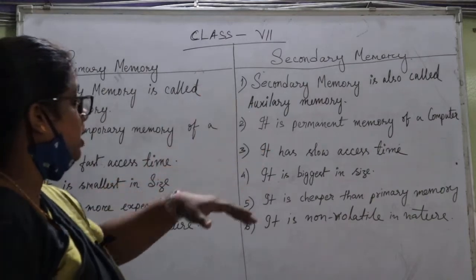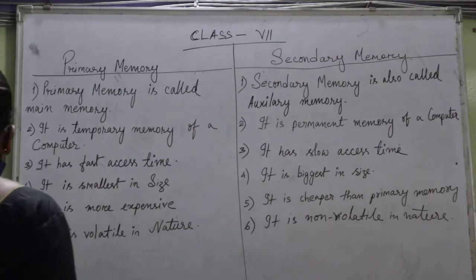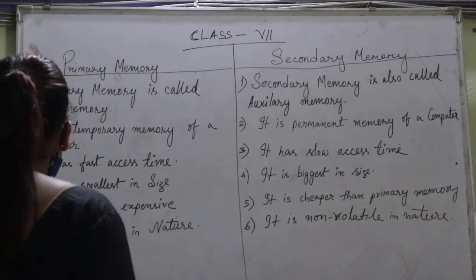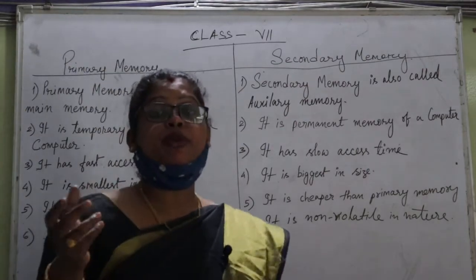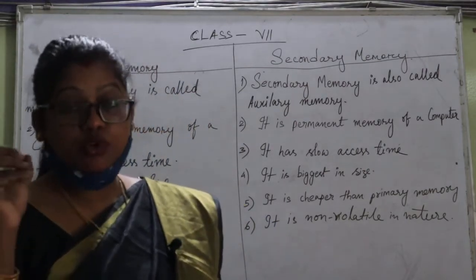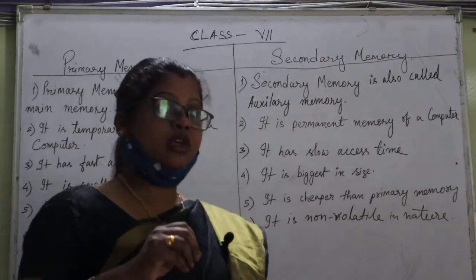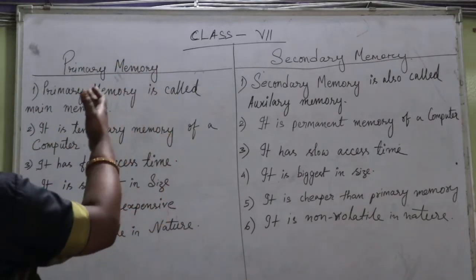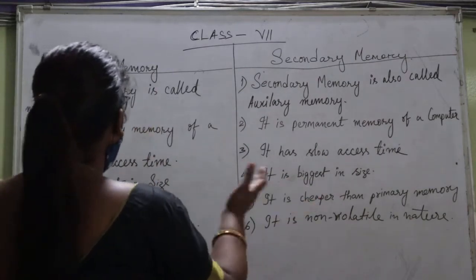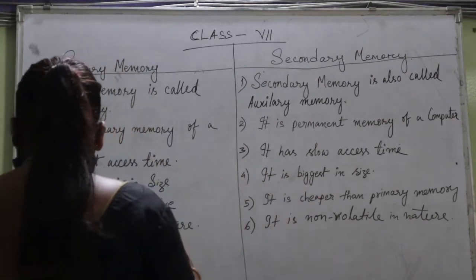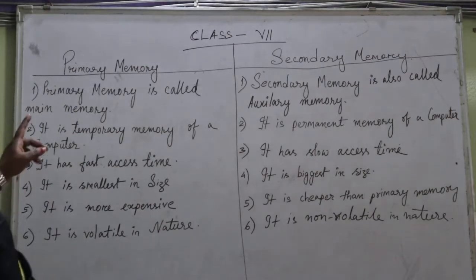First of all, we know what is computer memory. Computer memory is a storage device which is used to store information. Computer memory is a place where we can store information. From computer memory, there are two types: primary memory and secondary memory.